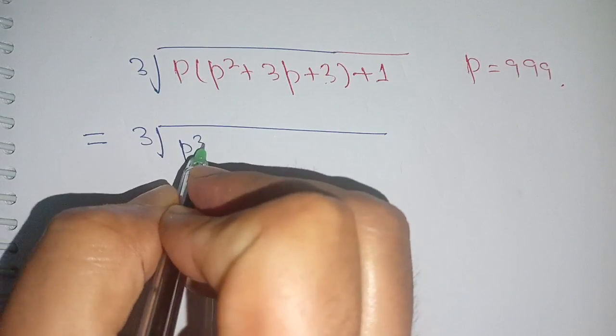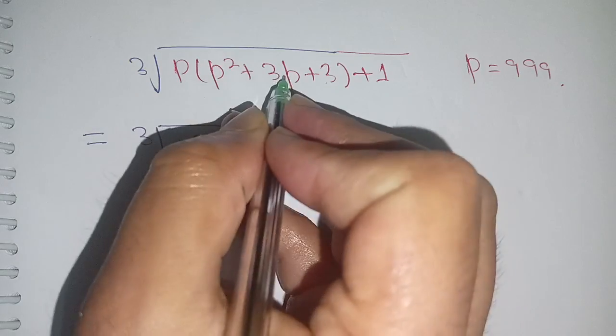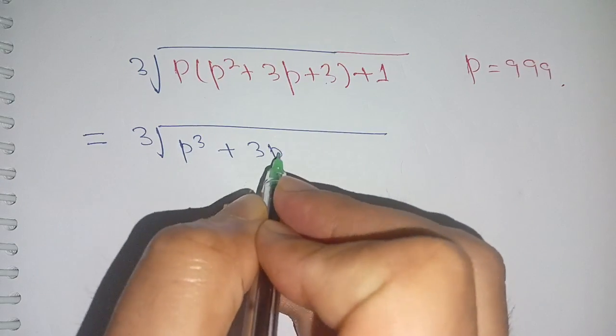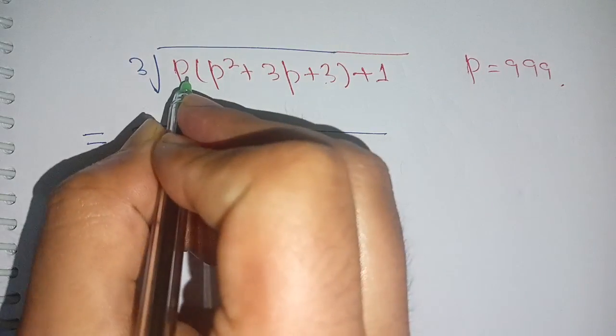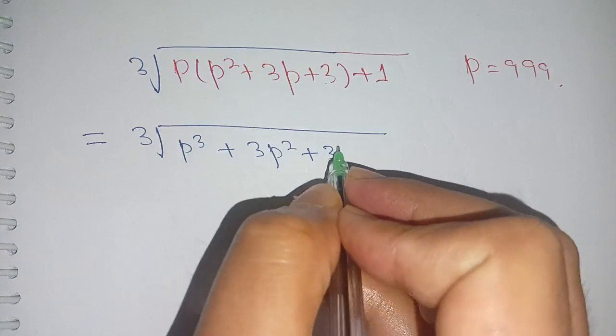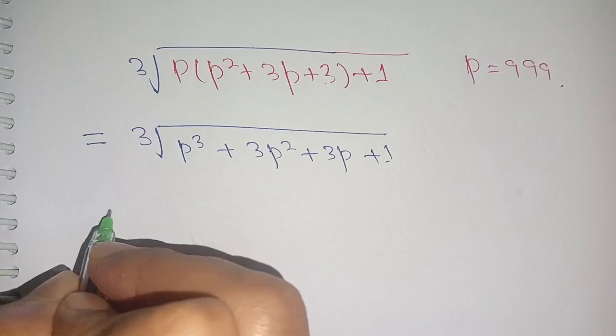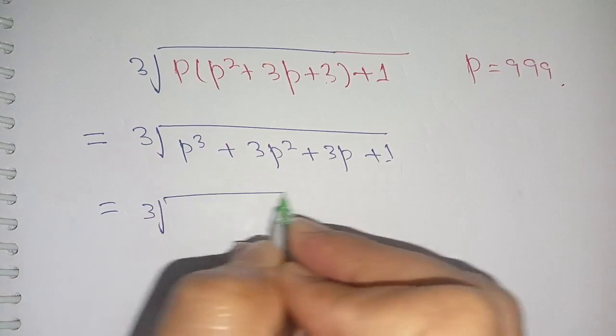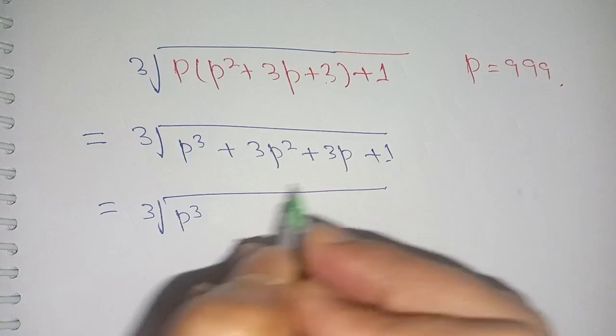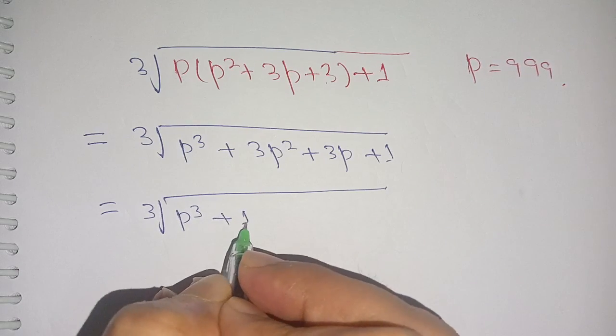It becomes p³ + p times 3p, which is 3p², + p times 3, which is 3p, + 1. Now we can write this as cube root of p³, and this one can be written as 1³.